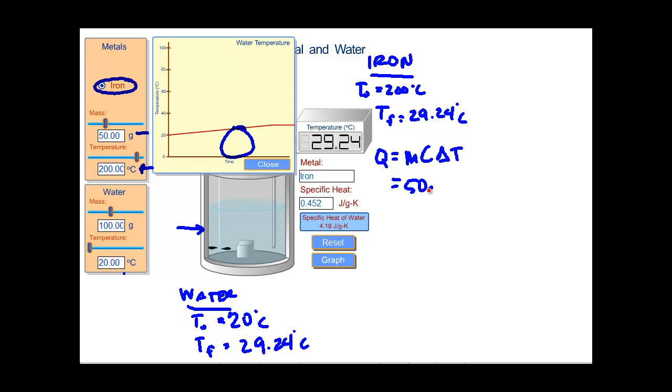So we're going to take 50 grams times the specific heat of iron, which is 0.452, and that's in units of joules per gram kelvin, times the difference in my temperature. Now it doesn't matter if we're in Celsius or kelvin if we're taking a difference. 29.24 minus 200, and that's all in Celsius, so the grams and kelvins go away because of the kelvin here, and we're left with a heat loss in this case of 3860 joules.